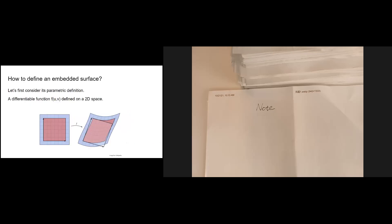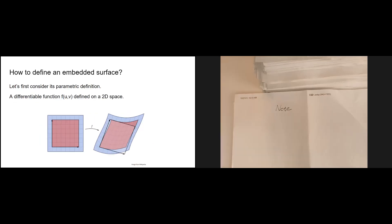The first question we want to answer is how to define an embedded surface. The parametric definition is the definition most familiar to us — it's a differentiable function F(u, v) defined on a 2D space that maps a point on a plane to a point in 3D space. However, if it's just that simple definition, there might be pathological cases which we don't want, similar to the ones Shichang introduced last week.